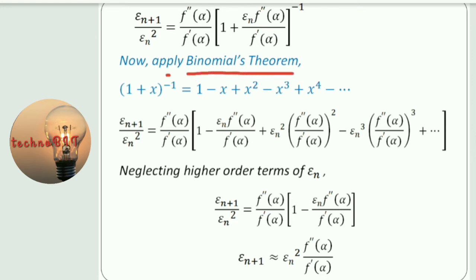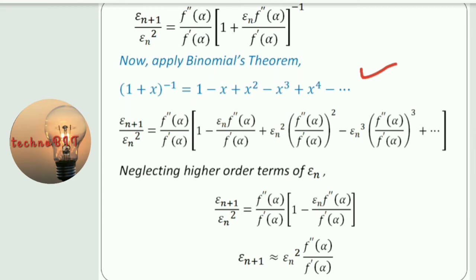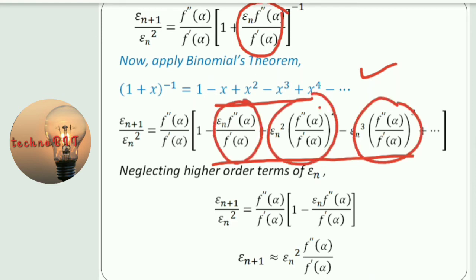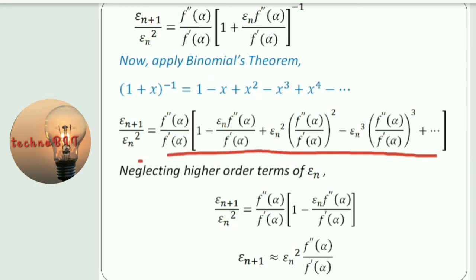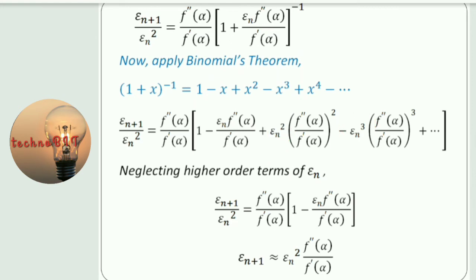The binomial theorem expansion gives us 1 minus x plus x squared minus x cubed, and this is the expansion of the bracket term, where x is the ratio term. Again we get epsilon_n squared, epsilon_n cubed, epsilon_n to the power 4 terms, and since we have already assumed epsilon is a very small quantity, higher order terms will be very very small. So we can neglect them, and what remains is only the leading term.